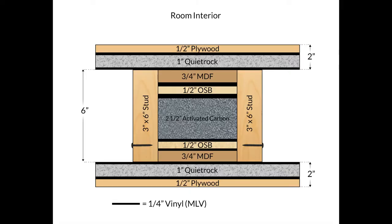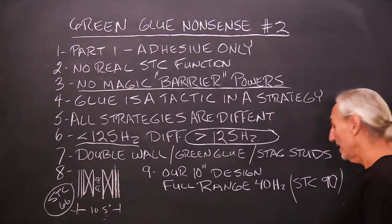So let's look at our design. Same ten and a half inches of space, completely different design, not double wall, not wasted air space. Same ten and a half inches of space. I think we're even a half inch less. And we're looking at an STC of 90.